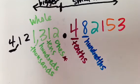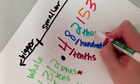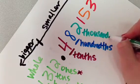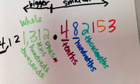That next spot, three spots behind the decimal place, is called thousandths. Thousandths.